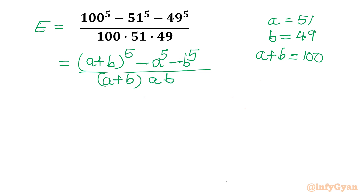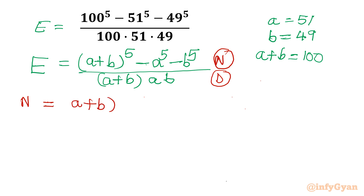So ultimately we have to simplify this expression first. Let me consider the numerator first — this is the numerator and this is the denominator. So let's simplify the numerator first. We can write it as A plus B whole power 5 minus A power 5 minus B power 5. I will use expansion, so for that I need Pascal's triangle for power 5.